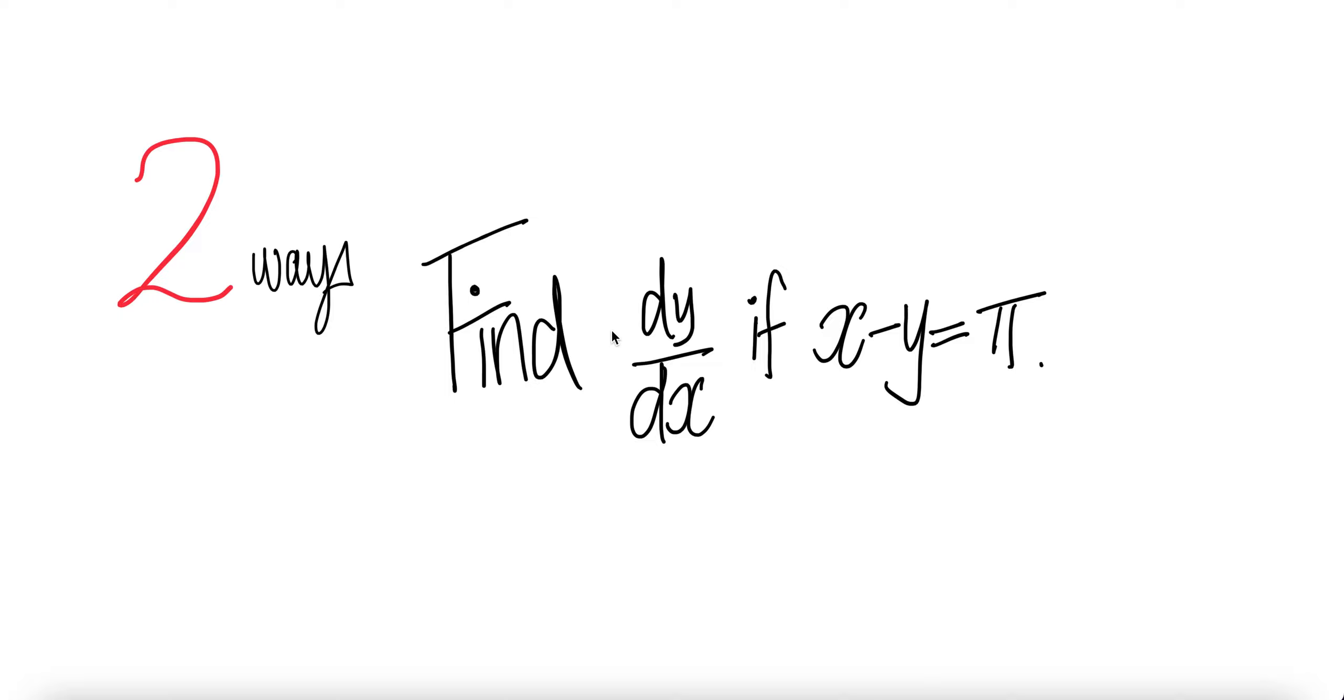We are going to look at two ways to find dy/dx if you are given x minus y equals π.